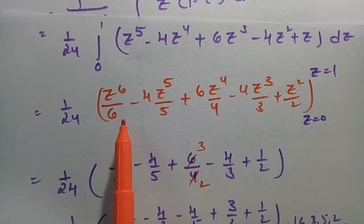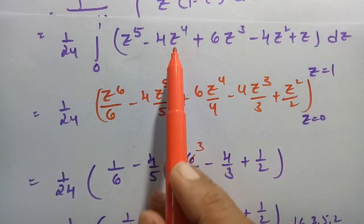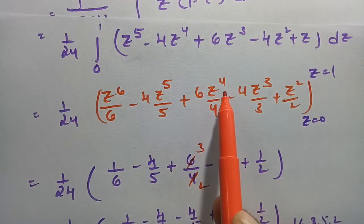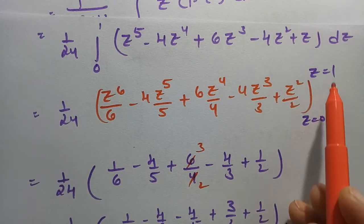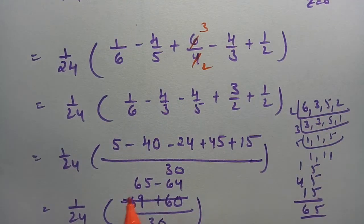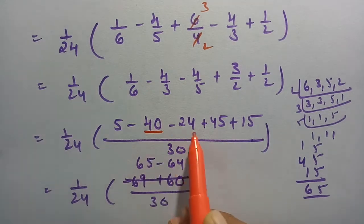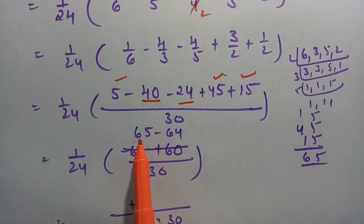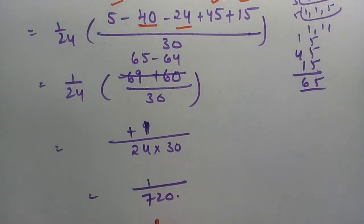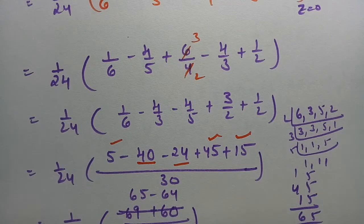Finally I integrated with respect to z: z to the power 5 gives z to the power 6 by 6, z to the power 4 gives z to the power 5 by 5, z cubed gives z to the power 4 by 4, and so on. Between limits 0 to 1, with LCM 30, the negative and positive terms give 65 minus 64 = 1, so the final answer is 1 by 720.